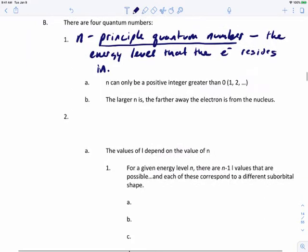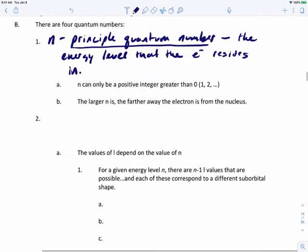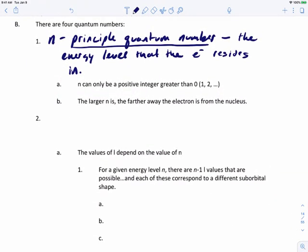So n can be a positive integer that's greater than zero, so it's got to be one, two, three, and so on. And the larger that n is, the farther away the electron will be from the nucleus.